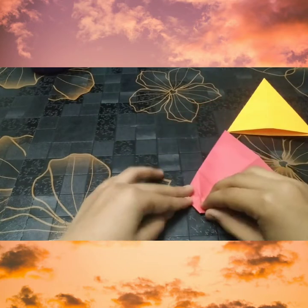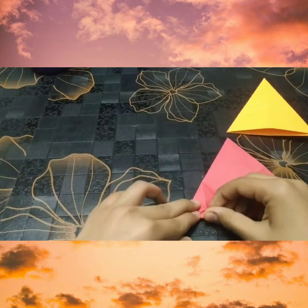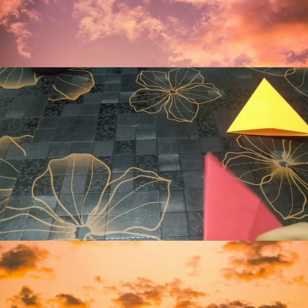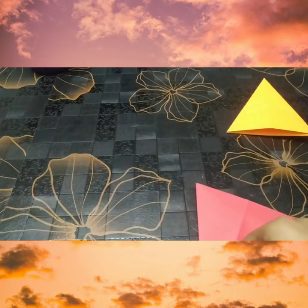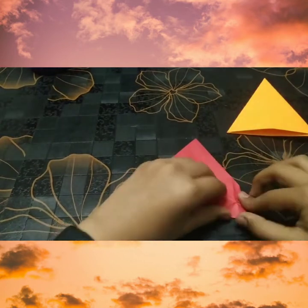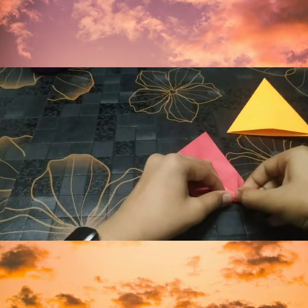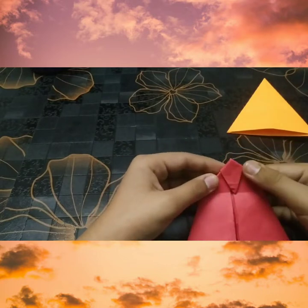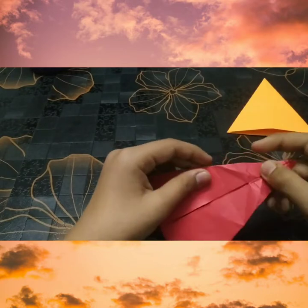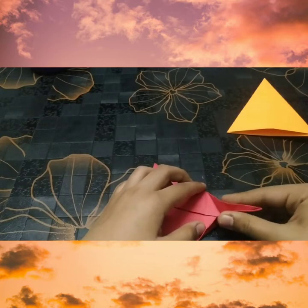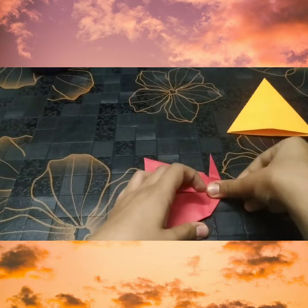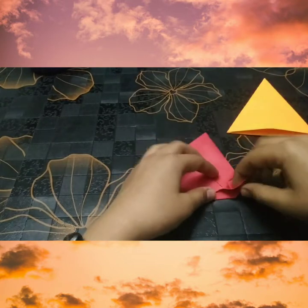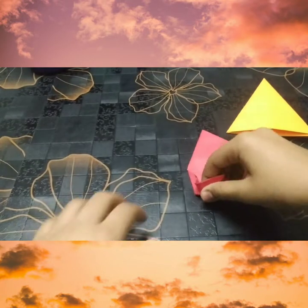Now turn over and do the valley folds. Do the valley folds and then open them. Open them and turn over and make them a rabbit ear fold. Now squash it.